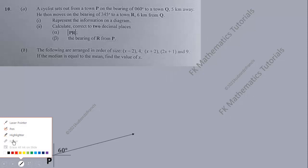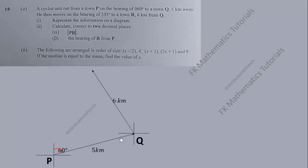Now we're also told that the distance is 5 kilometers. He then moves on the bearing of 345 degrees, so we are now here. We are going to measure 345 from the north in the clockwise direction. This is 345 degrees and the distance is 6 kilometers.